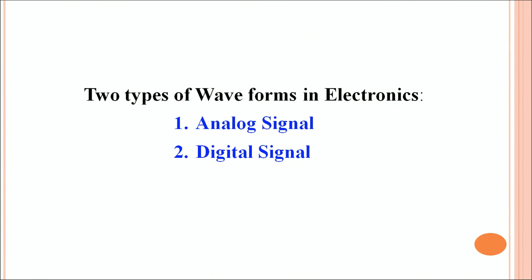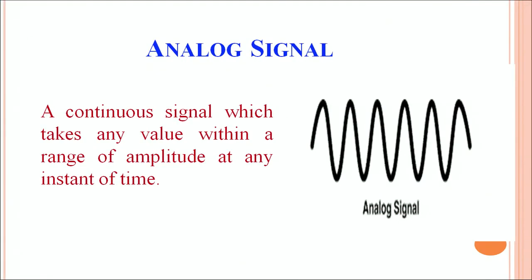In electronics we have two basic kinds of waveforms: analog signal and a digital signal. An analog signal is a continuous signal which takes any value within a range of amplitude at any instant of time. It can be a sine wave, cosine wave, or any such periodic wave which varies continuously. An analog signal is periodic and repetitive.